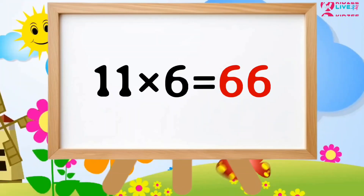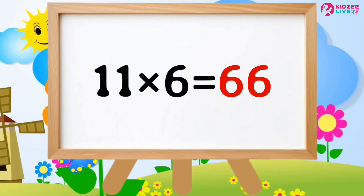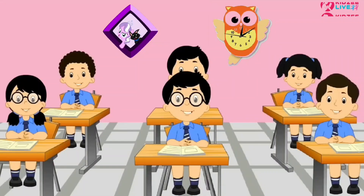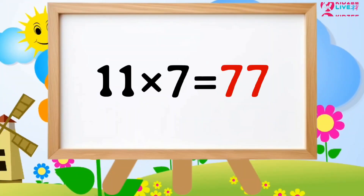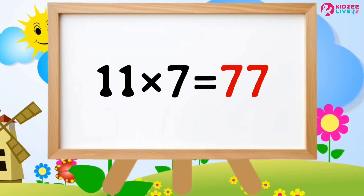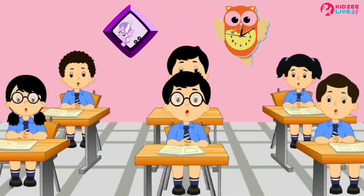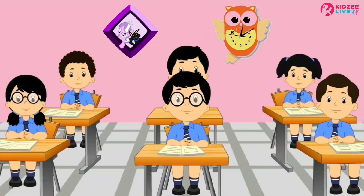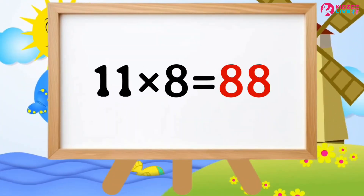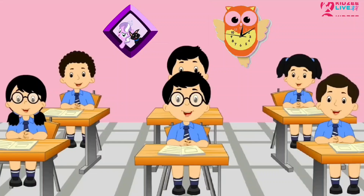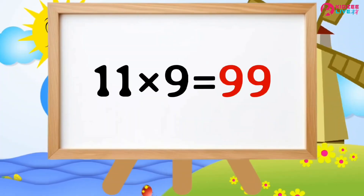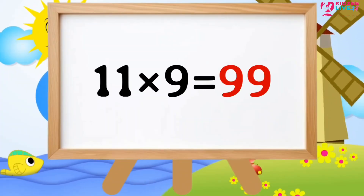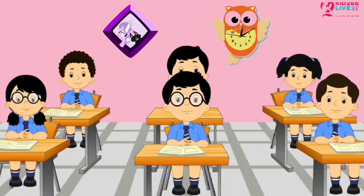Eleven sixes are sixty-six. Eleven sevens are seventy-seven. Eleven eights are eighty-eight. Eleven nines are ninety-nine.